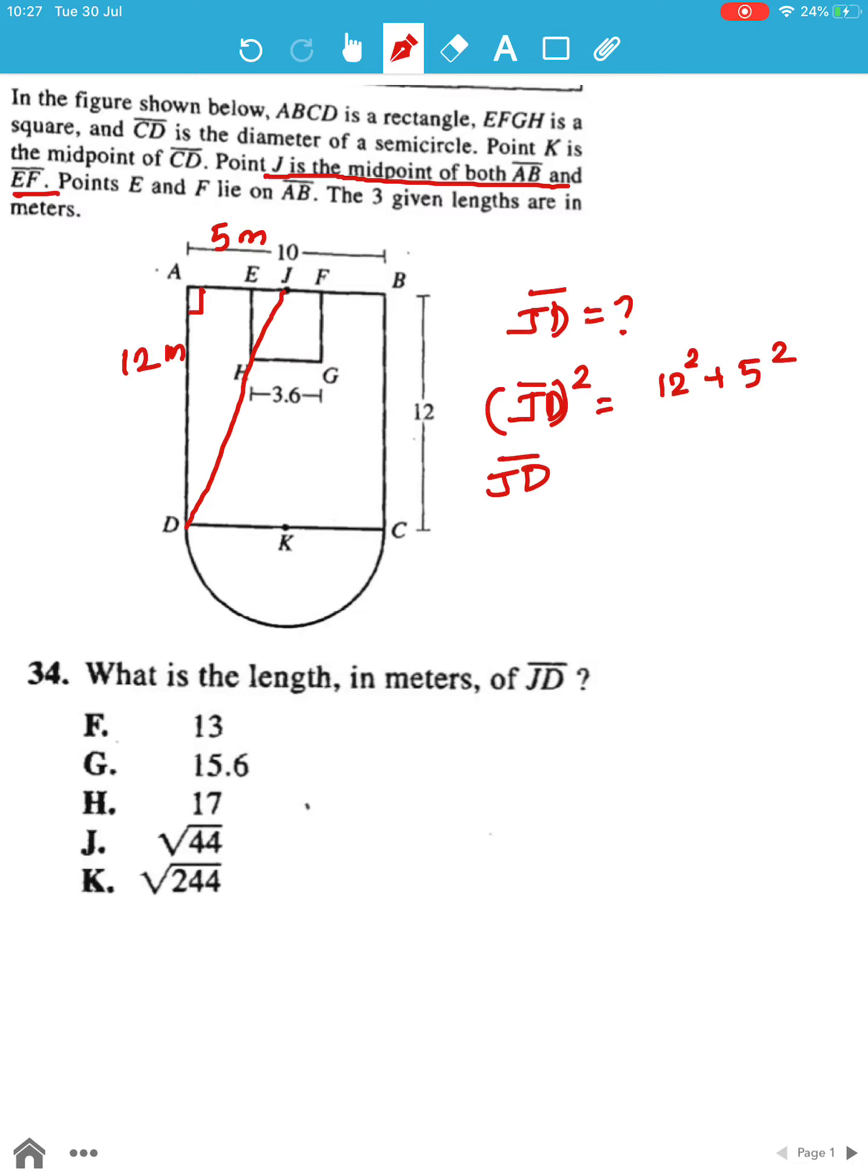JD is equal to square root of 144 plus 25 and JD is equal to square root of 169. Finally we have JD is equal to 13 meters. Square root of 169 is 13 hence JD is equal to 13 meters and this is given by option F.